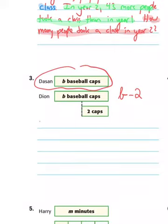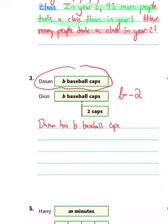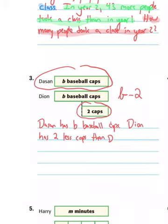Dasan has B baseball caps — we don't know how many he has. Dion must have two fewer because it's taking two away. So maybe Dion has two less caps than Dasan. And then last, we need a question: how many caps does Dion have?